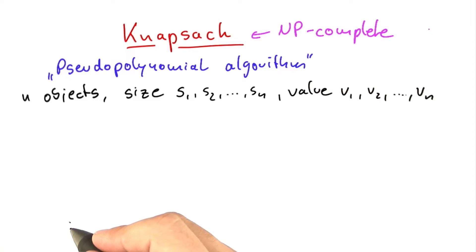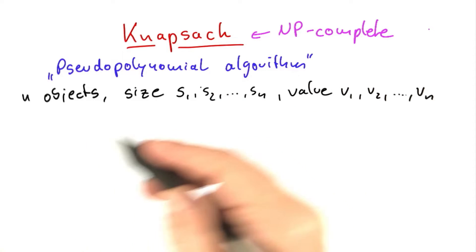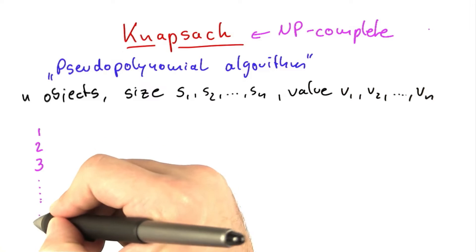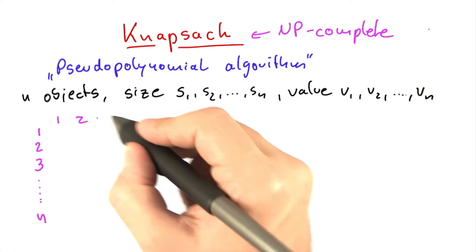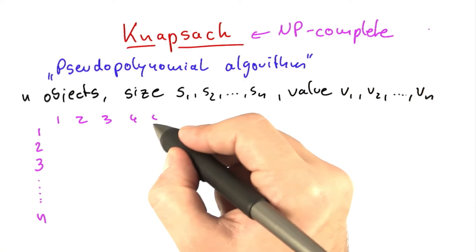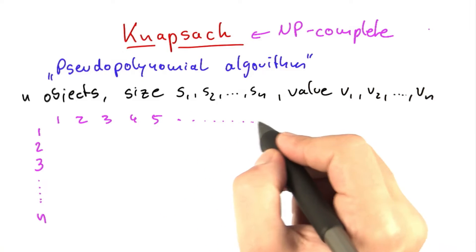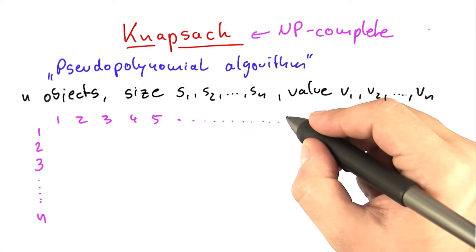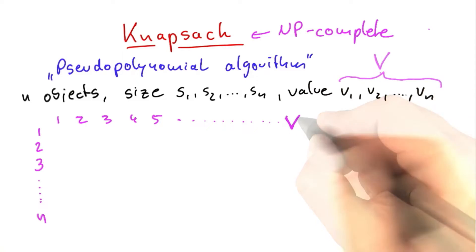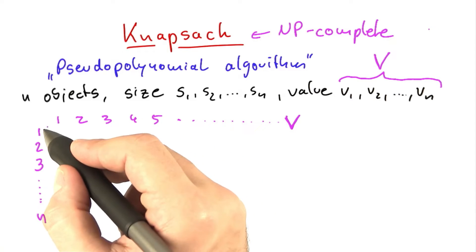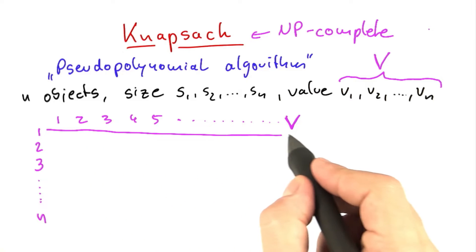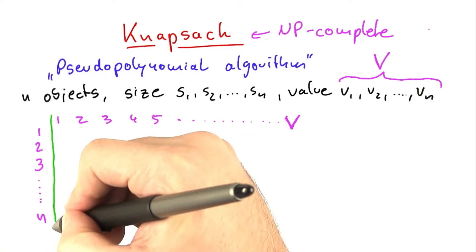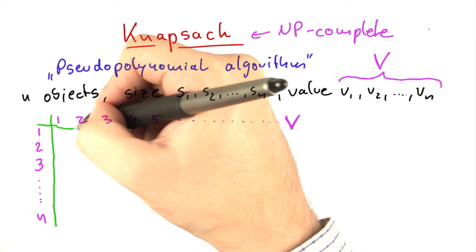The algorithm works with a table. The table has n rows — 1, 2, 3, down to n — and the table has many columns: 1, 2, 3, 4, 5, and so on, until we get to a number I'll call V. By V, I mean the sum of all the values: v1 plus v2 and so on plus vn.